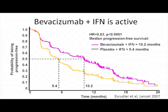Why should I use bevacizumab? First of all, it is active. This is the pivotal trial that led to registration in Europe — the AVOREN trial — published seven years ago in the Lancet. When you look at the data, bevacizumab plus interferon produced a 10.2-month PFS. Remember what was seen in the COMPARZ trial — it was less than 10.2 months.